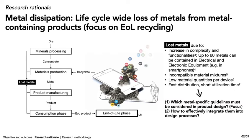I move on to the research rationale. The project is based on the challenge or risk of metal dissipation, which basically occurs along the whole life cycle of a product. Here we focus on the metal dissipation caused in the end-of-life phase. The reasons include an increase in complexity and functionality of products — for example, smartphones can contain up to 60 elements — low material quantities per device, fast distribution and short utilization times, and the use of metal combinations not compatible with contemporary recycling technology.